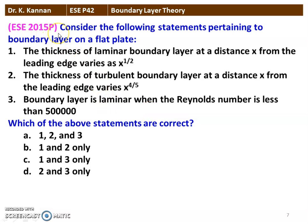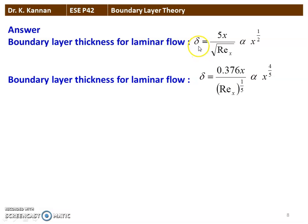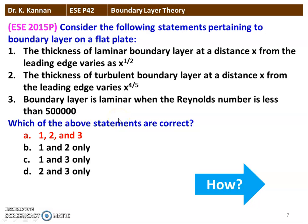Next question from the 2015 question paper: consider the following statements pertaining to the boundary layer on a flat plate. Statement 1: thickness of laminar boundary layer at a distance x from the leading edge varies as x^(1/2). Statement 2: thickness of turbulent boundary layer varies as x^(4/5). Statement 3: boundary layer is laminar when the Reynolds number is less than 5 lakh. All three statements are correct. For laminar flow: δ = 5x/√Re ∝ x^(1/2). For turbulent: δ = 0.376x/Re^(1/5) ∝ x^(4/5). Laminar condition: Re < 5×10⁵.